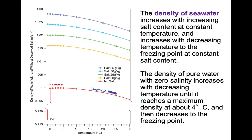If we look at seawater with different salt contents — 20 grams per kilo shown by the yellow curve, and 35 grams per kilo shown by the dark blue curve — the density of seawater increases from the orange curve to the dark blue curve with increasing salt content at constant temperatures, and increases with decreasing temperature due to the freezing point of constant salt content.